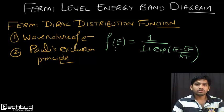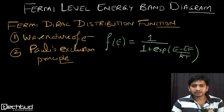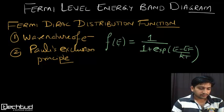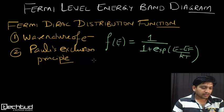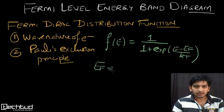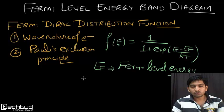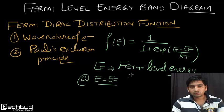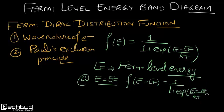This shows the probability of finding an electron at energy state E. When E is equal to EF, F(EF) equals 1 divided by 1 plus exponential of (EF minus EF) divided by kT, which is 1 divided by 1 plus exponential(0), which equals 1/2. So the probability of finding an electron at energy state E equal to EF is one-half.